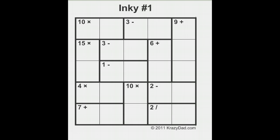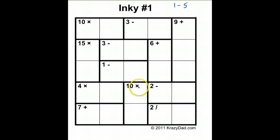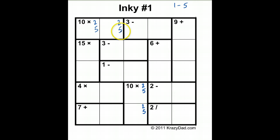I like to start in the cages where there are only a few options. My options in general are 1, 2, 3, 4, and 5 because it's a five by five. So if I go to the ten-multiplication box, I know my only options are two and five. The same thing applies here — two and five, and also three and five.